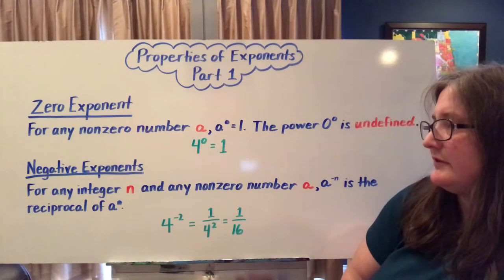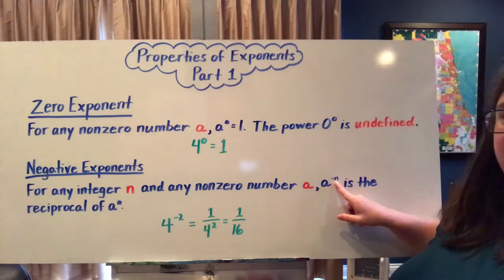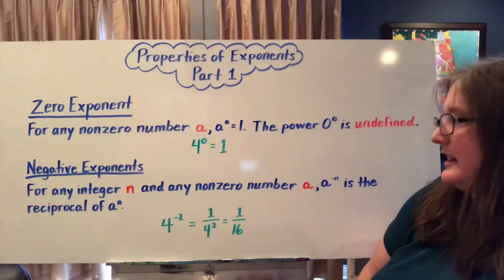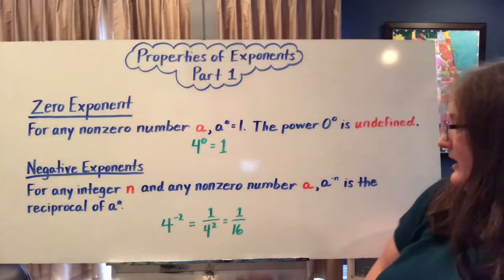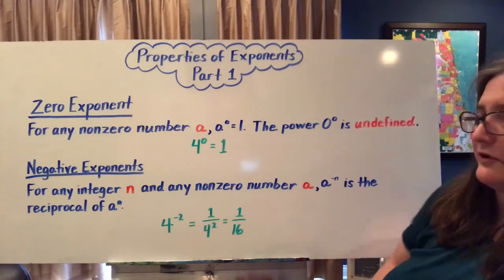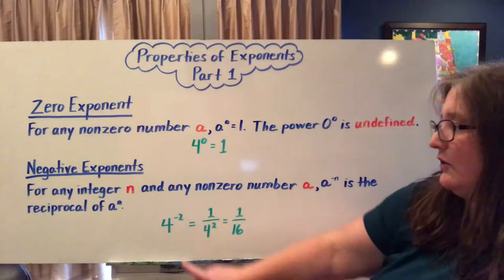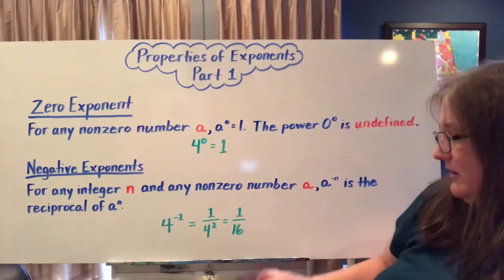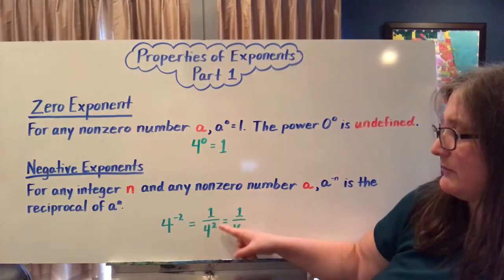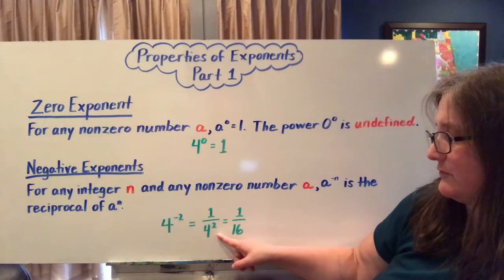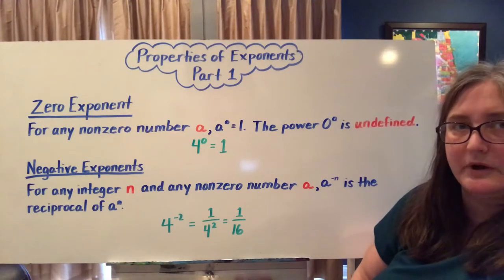When I see negative exponents, with an integer as my negative exponent and a non-zero number base, I can find the reciprocal of a to the nth power, and it will be equal to a to the negative n. So four to the negative second power is really the reciprocal of four to the second power — one over four squared. And four squared equals sixteen, so it's equal to one sixteenth.